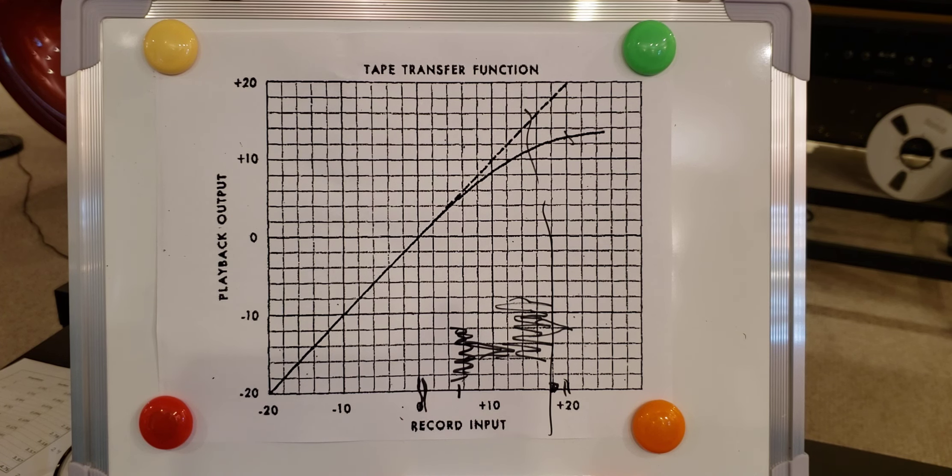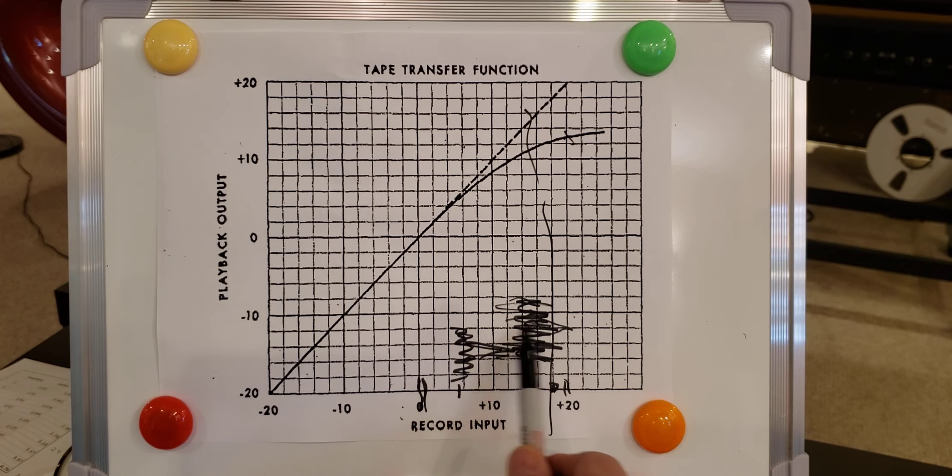But things happen differently when you have most activity in this area as we just seen on the VU meter. The right VU meter was really moving like crazy in this area and plus on top of that there were some peaks.